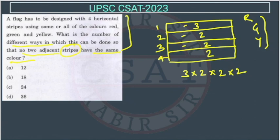So the total number of ways is 3 × 2 × 2 × 2 = 24. The answer is option C.